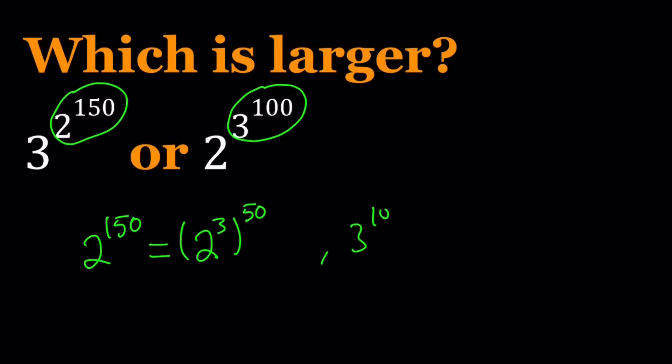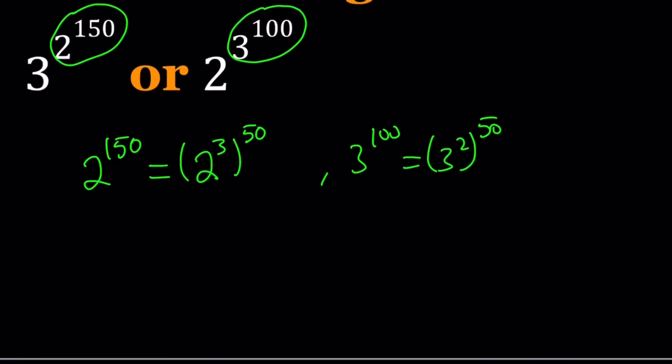And 3 to the power 100 can be written as 3 to the second power to the power 50. Notice that these two numbers have the same exponent if you just ignore what's inside the parentheses. Make sense? Obviously, 3 squared is 9 and 2 cubed is 8, right? So 3 squared is greater than 2 to the third power. 9 is greater than 8.